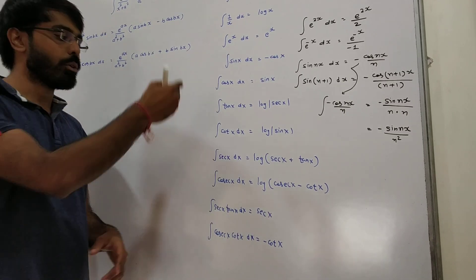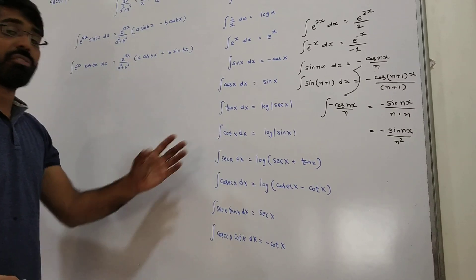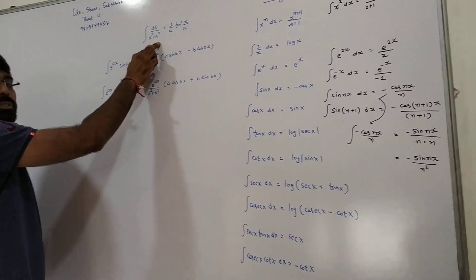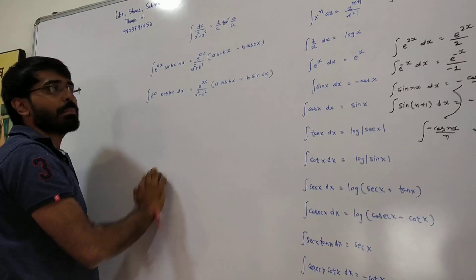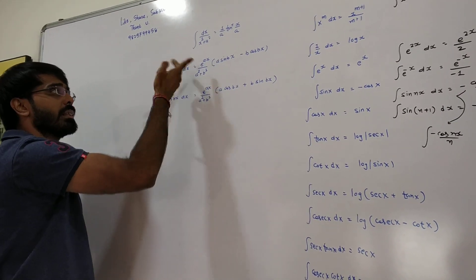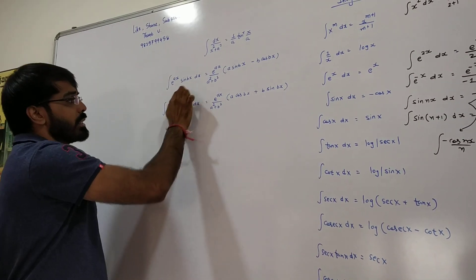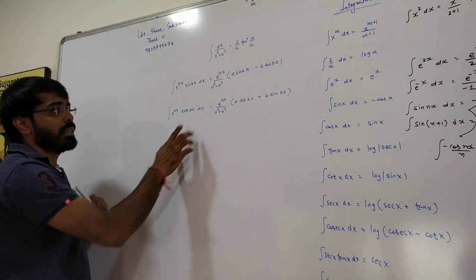Higher order chapter is required. First order chapter is required. 1 upon x squared plus a squared — most important. Fourier series is required.